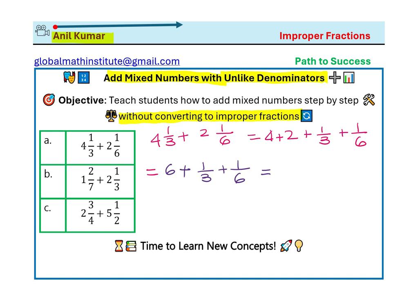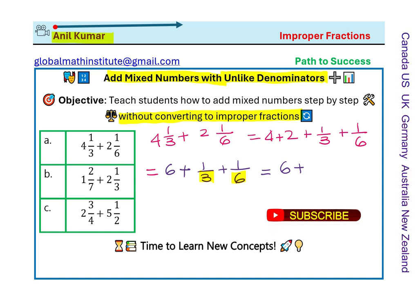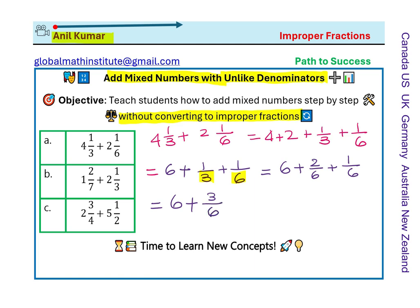For 1/3 and 1/6, we look for a common denominator, which is 6, because 6 is a multiple of 3. So we have 6 plus — we convert 1/3 by multiplying by 2, giving 2/6, while the other fraction is already 1/6. So we get 2 plus 1 equals 3, giving us 3/6. We can simplify 3/6 and make it 1/2.